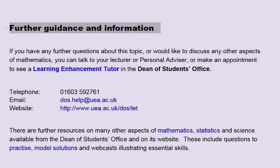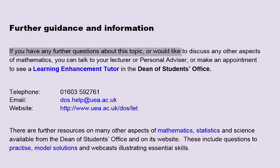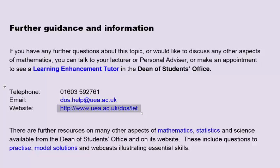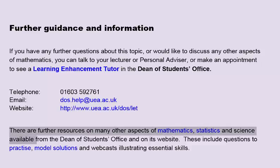Further guidance and information. If you have any further questions about this topic or would like to discuss any other aspects of mathematics, you can talk to your lecturer or personal advisor, or make an appointment to see a learning enhancement tutor in the Dean of Students office. Telephone 01603 592761, email dos.help.uea.ac.uk, or visit www.uea.ac.uk/dos/let. There are further resources on many other aspects of mathematics, statistics and science available from the Dean of Students office and on its website, including practice questions, model solutions and webcasts illustrating essential skills.